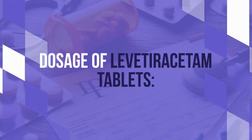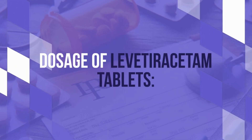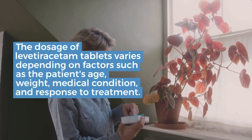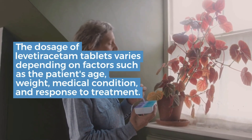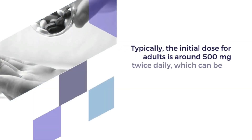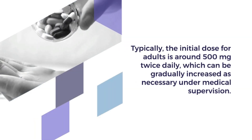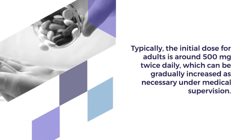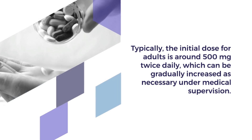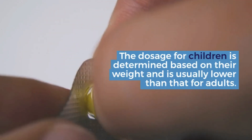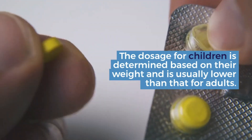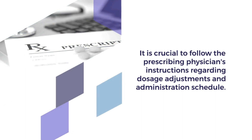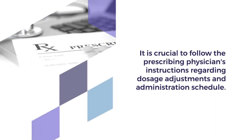Dosage of levatoracetam tablets. The dosage of levatoracetam tablets varies depending on factors such as the patient's age, weight, medical condition, and response to treatment. Typically, the initial dose for adults is around 500 milligrams twice daily, which can be gradually increased as necessary under medical supervision. The dosage for children is determined based on their weight and is usually lower than that for adults. It is crucial to follow the prescribing physician's instructions regarding dosage adjustments and administration schedule.